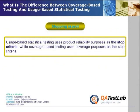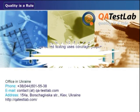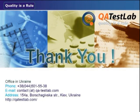Stopping Aspect: Usage-based statistical testing uses product reliability purposes as the stop criteria, while coverage-based testing uses coverage purposes as the stop criteria. For more information, visit catistlab.com.